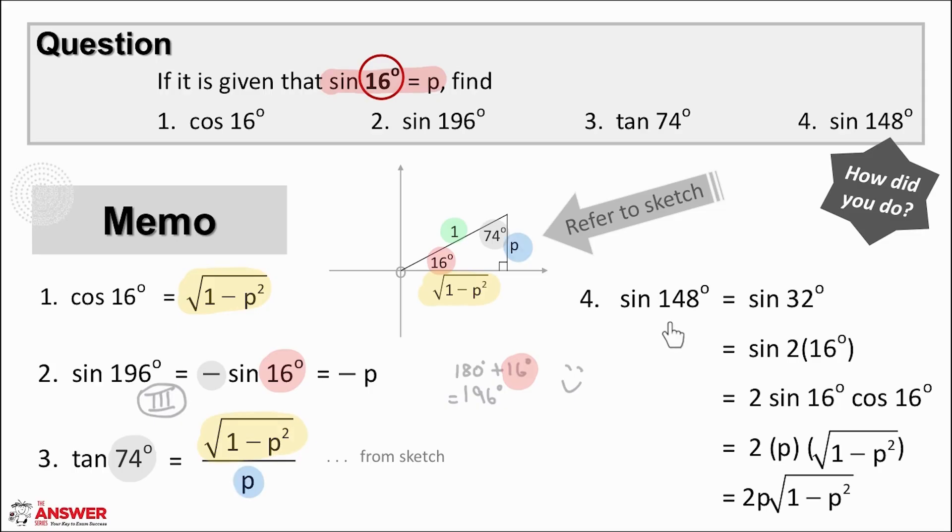The fourth part of the question asks us to find sin of 148 degrees. Does this angle ring a bell from our earlier thinking process? Not to worry if it doesn't because your first step is always to reduce to the ratio of an acute angle. So let's do that first. 148 degrees is a second quad angle forming an angle of 32 degrees with the x-axis and sin in the second quad is positive so this reduces to positive sin 32°.